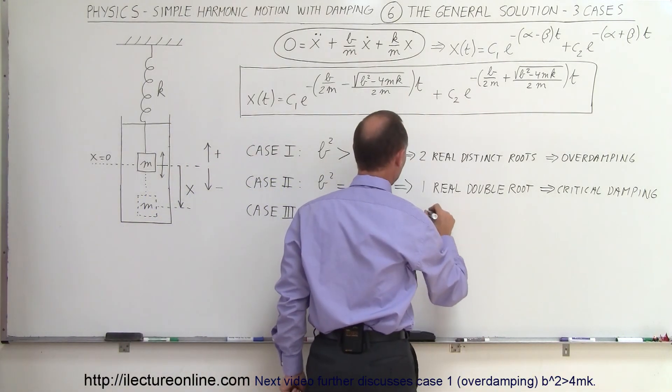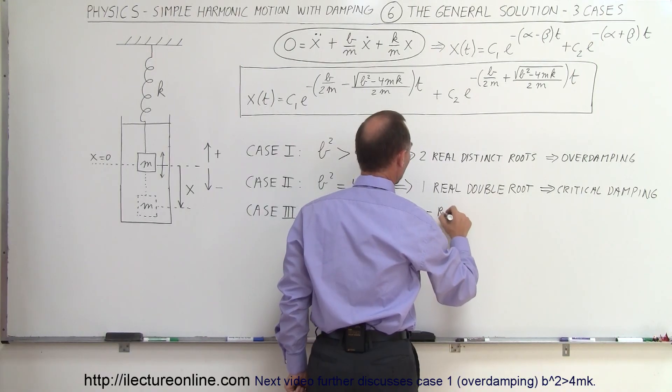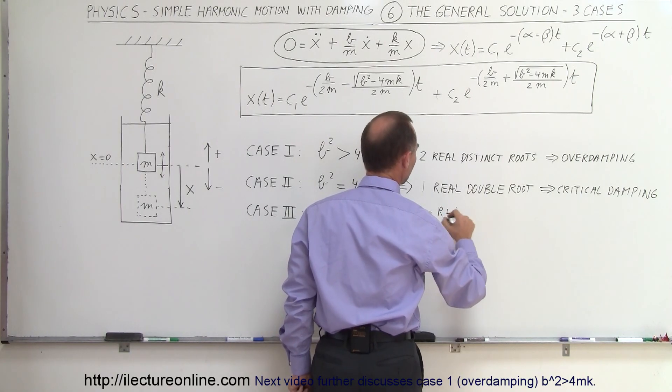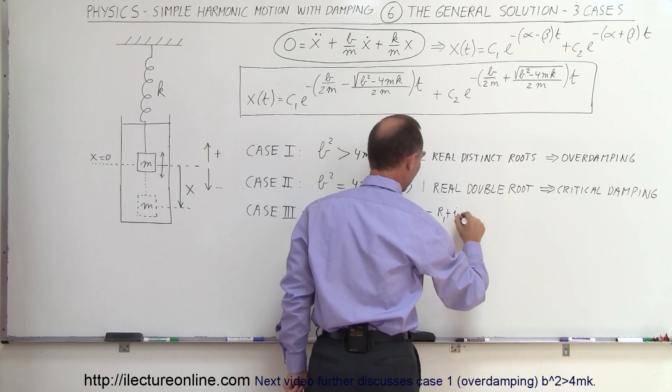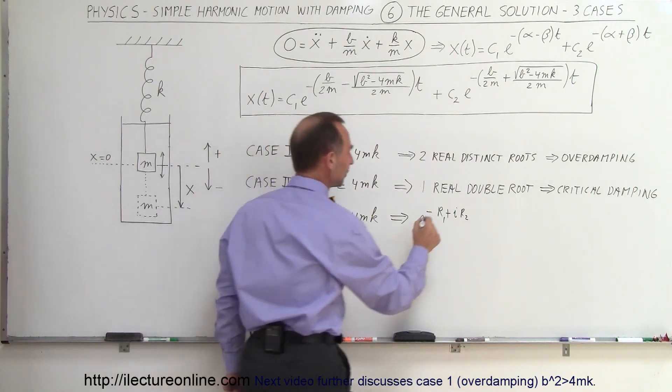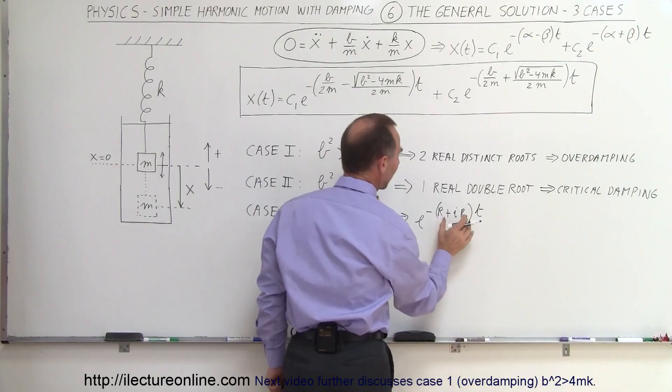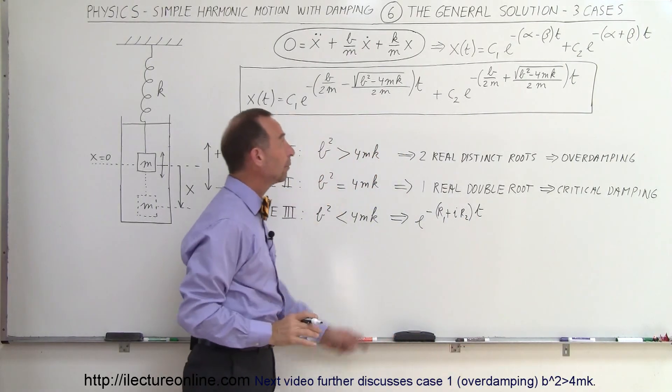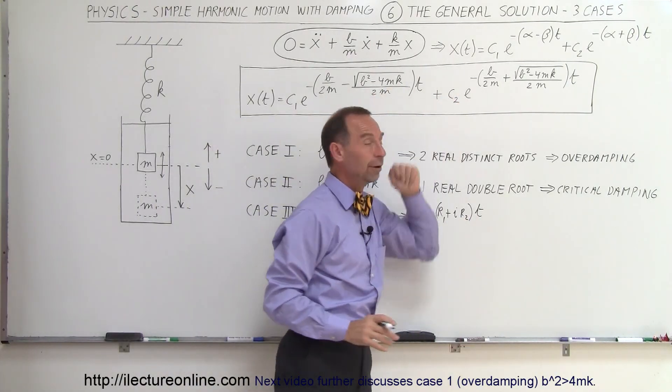So we have a case where we have an e to the minus real number plus an imaginary number. So let's call it R1 and R2. But notice that we have an imaginary solution and we have two of them, two imaginary roots.